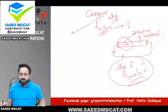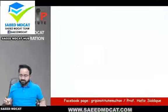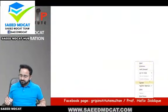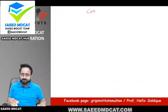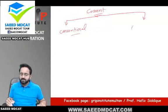Current hote hain do tarah ke — current ke types ki baat karte hain: conventional current and electronic current.